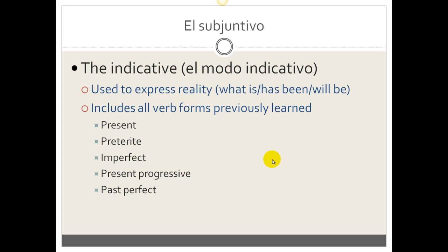First of all, let's put the subjunctive in context of what you already know in Spanish. So far what you've learned is the indicative mood. We're not talking about just another tense here, we're talking about another mood, which is how it's classified in Spanish.